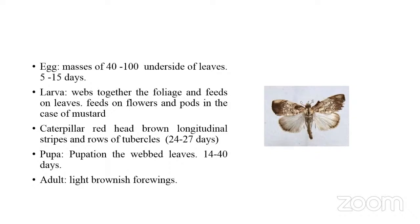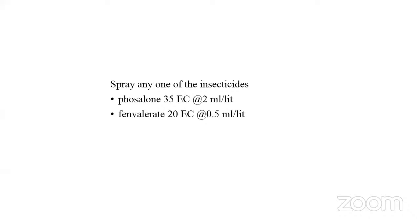The larva webbs together the foliage and feeds on the leaves. In mustard, it feeds on flowers and pods. This pest also attacks cabbage and cauliflower, feeding on flower heads. The caterpillar has a red head with brown longitudinal stripes and rows of tubercles on the body. The larval period lasts 24 to 27 days. Pupation occurs in a cocoon within the webbed leaves, with a pupal period of 14 to 40 days. The adult is a small light brown moth with white hind wings and brown markings on the margins. For management, spray fenvalerate or fenvalerate as this is a minor pest.